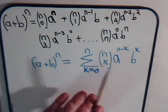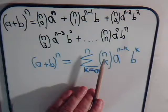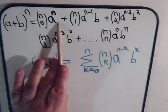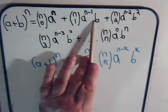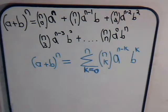And then what also happens simultaneously is that the exponent on b increases by one. Here you can think if we have b to the zero, then we have b to the one, b squared, b cubed, until we have b to the n power.